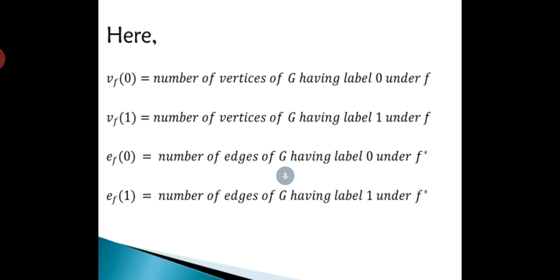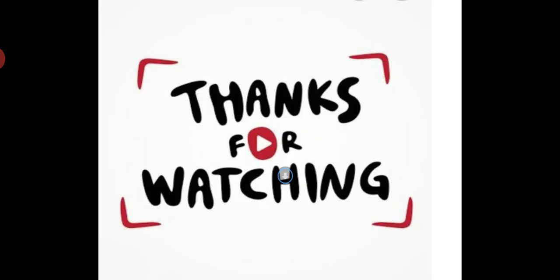e_f(0) = number of edges of G having label 0 under f*, e_f(1) = number of edges of G having label 1 under f*. That's all about binary vertex labeling.